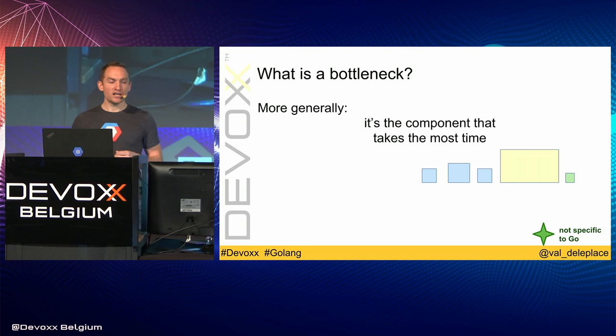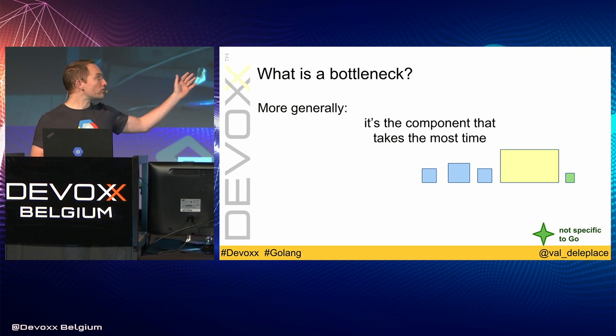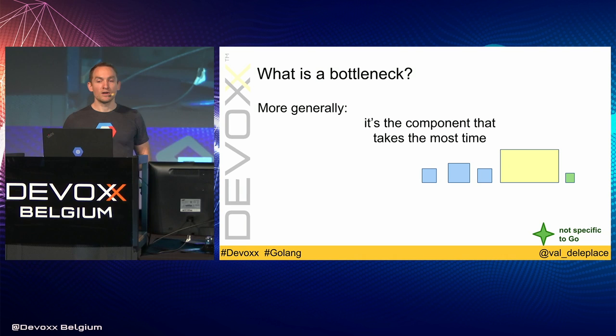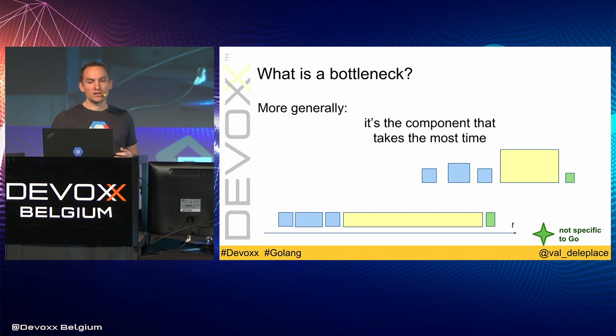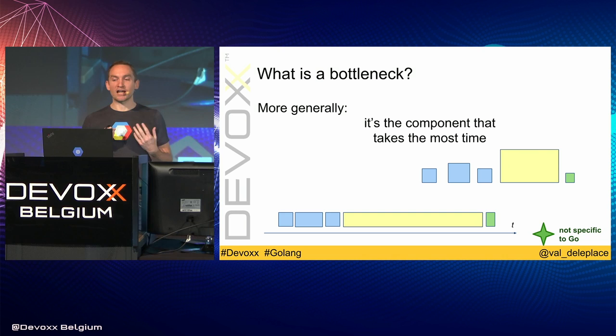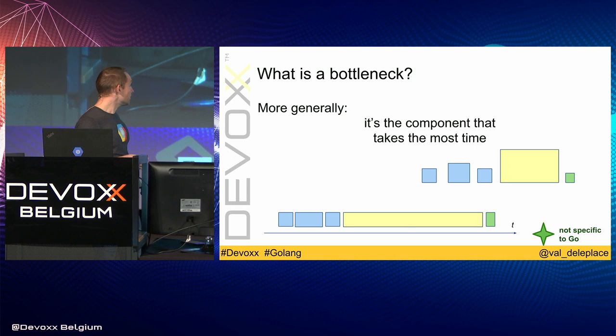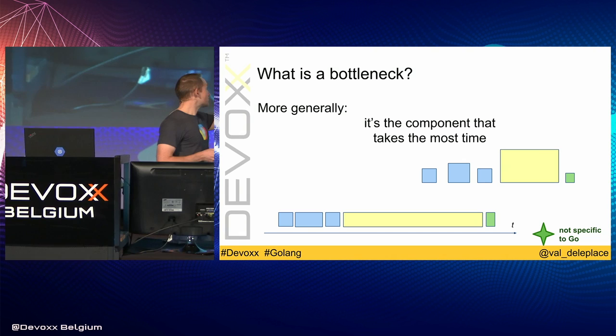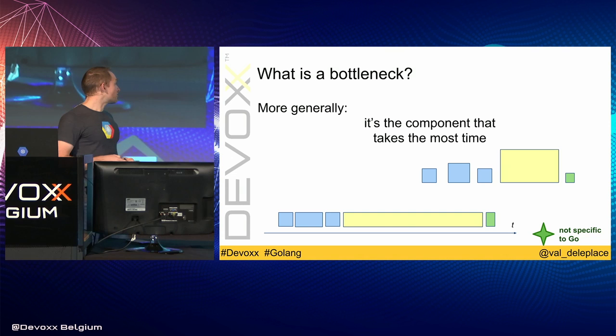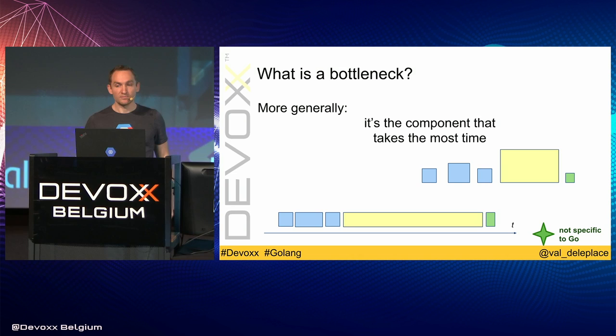Generally, a bottleneck is simply the component that takes the biggest part of the latency. These rectangles represent sequential tasks of my program — they don't run in parallel, just one after another. The surface area of each rectangle represents the amount of work it requires. It is very frequent that one task dominates the timeline. The yellow part on my timeline accounts for more than 50% of the total time — I could shave some milliseconds by improving the blue or green parts, but it's much more useful to focus on the bottleneck.